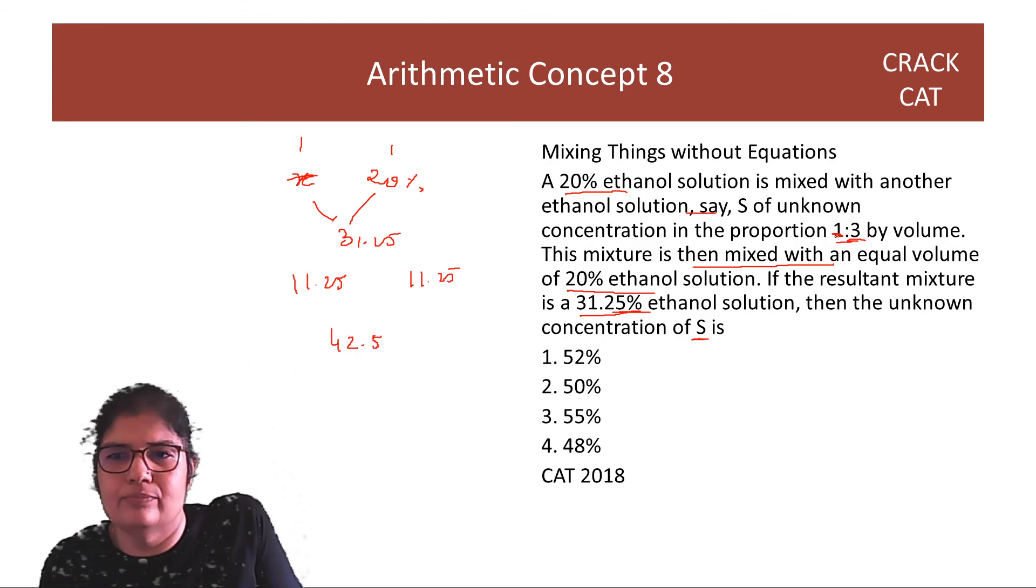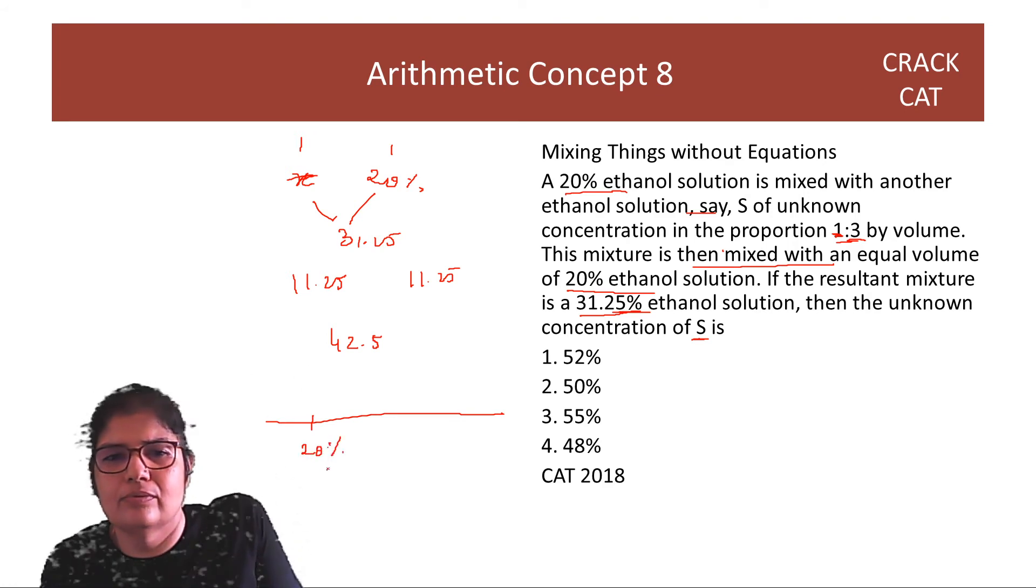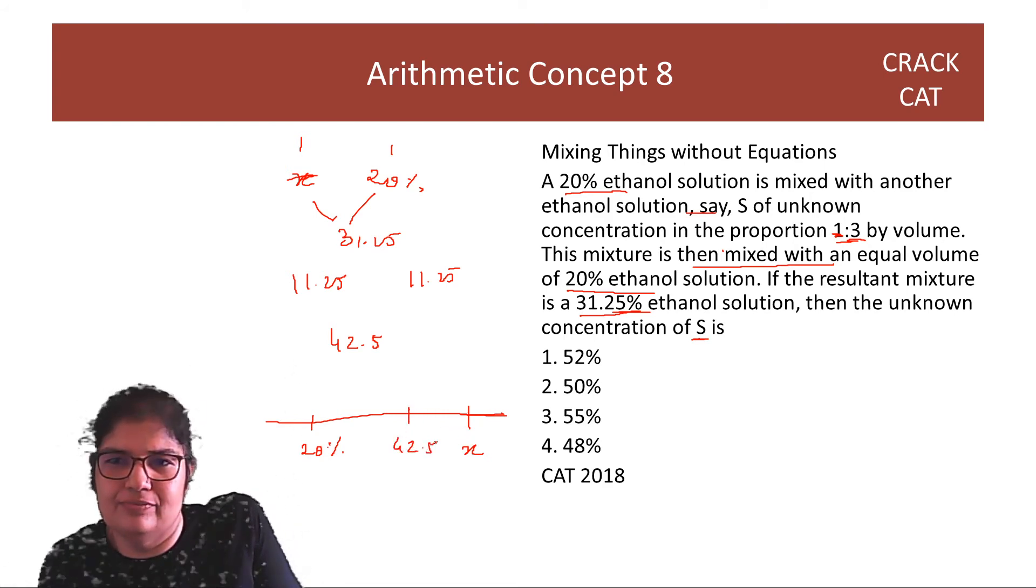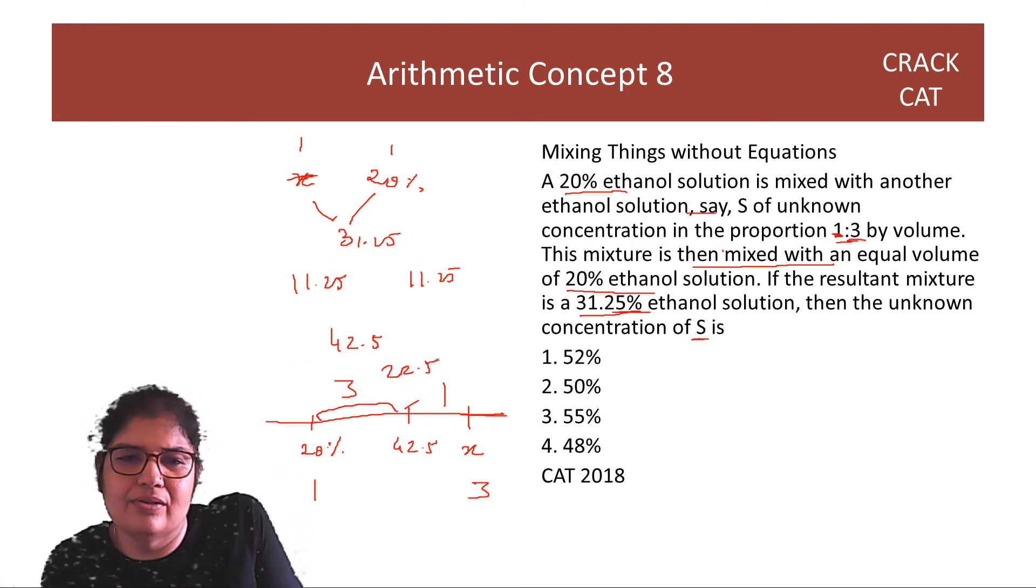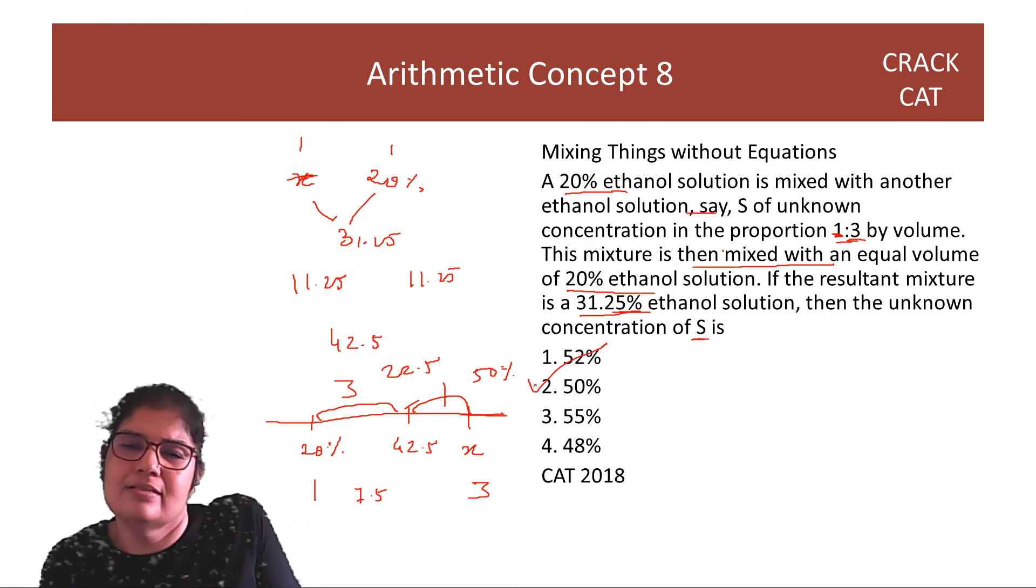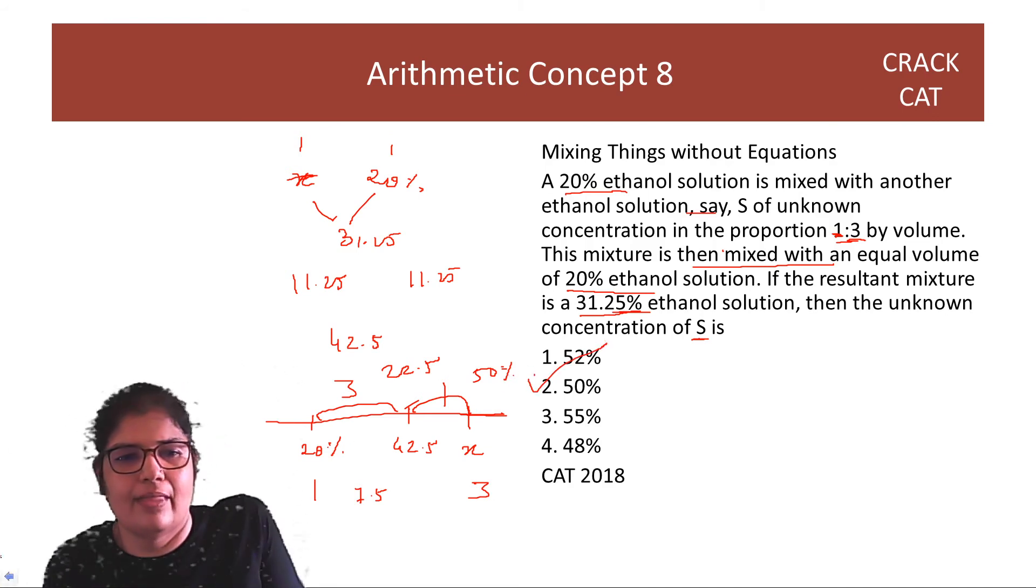So, now we come back to this story. That I am mixing a 20% ethanol solution with another solution. Again, X. So, that after mixing, we land up at 42.5. Yeh mixing at 1 is to 3. So, this will be in the ratio 3 is to 1. Yeh distance at 22.5. Divide by 3. 7.5. So, yeh distance at 7.5. And, we land up with 50%. So, answer is the second option. 50%.